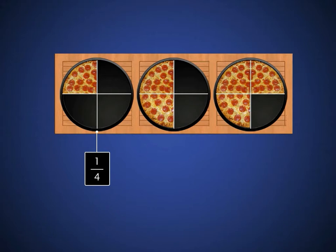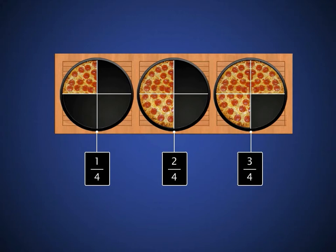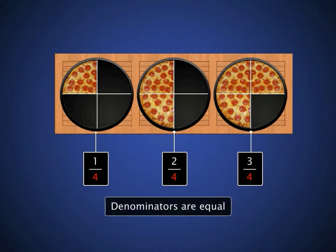Here are the fractions 1 over 4, 2 over 4, and 3 over 4 respectively. What do you observe in these fractions? Is there anything common in these fractions? The denominator, that is the number of parts that make a whole, is the same in all these fractions.